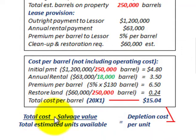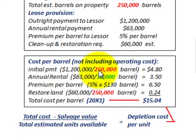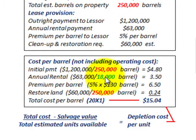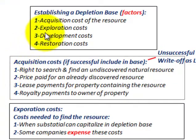Essentially that was our total cost minus any salvage value, divided by our total estimated units available. We calculated this for the total estimated site amount of 250,000 barrels, and also on a yearly basis for the annual amount of 18,000 barrels. That's just a basic example — it doesn't include any drilling costs and the rest. Let's go look at what we're talking about on these guidelines.